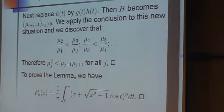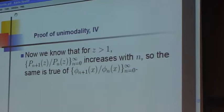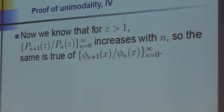And so the ratios pn plus 1 over pn do increase again. And so the same is true of phi n plus 1 over phi n, which are obtained from the pn by a simple transformation. So there's a unique value of n at which this maximum is going to be reached.